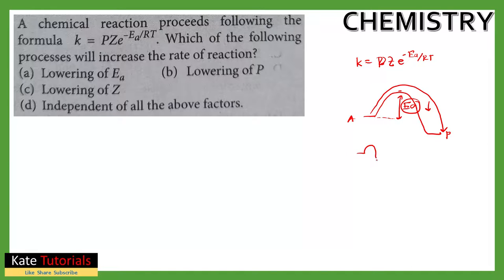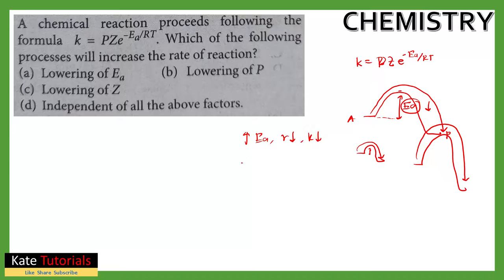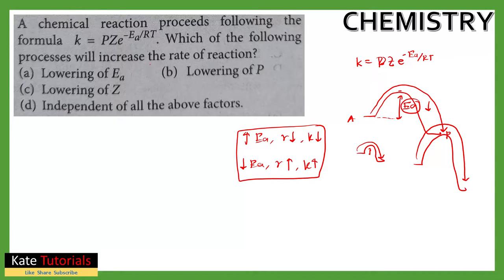If the activation energy barrier is small, reactants can easily convert to products. If the barrier is large, the reactants must jump to a greater height to form products. Therefore, greater Ea means lower rate of reaction and lower rate constant k. Conversely, smaller Ea means greater rate of reaction and greater rate constant. To increase the rate, we need lower Ea.